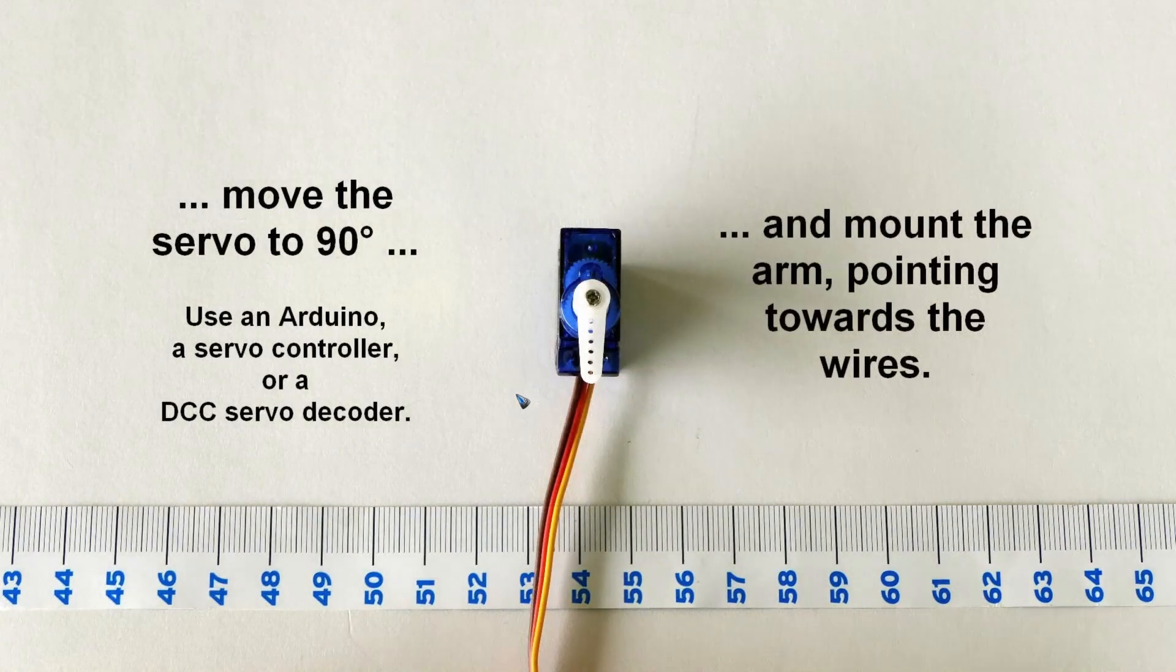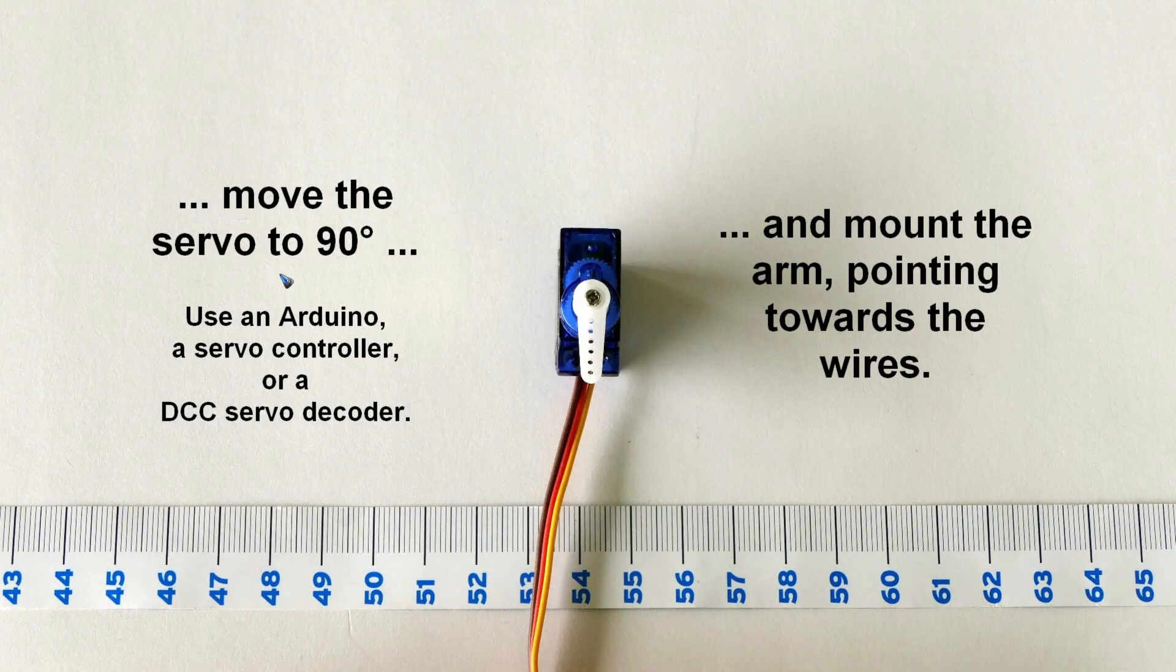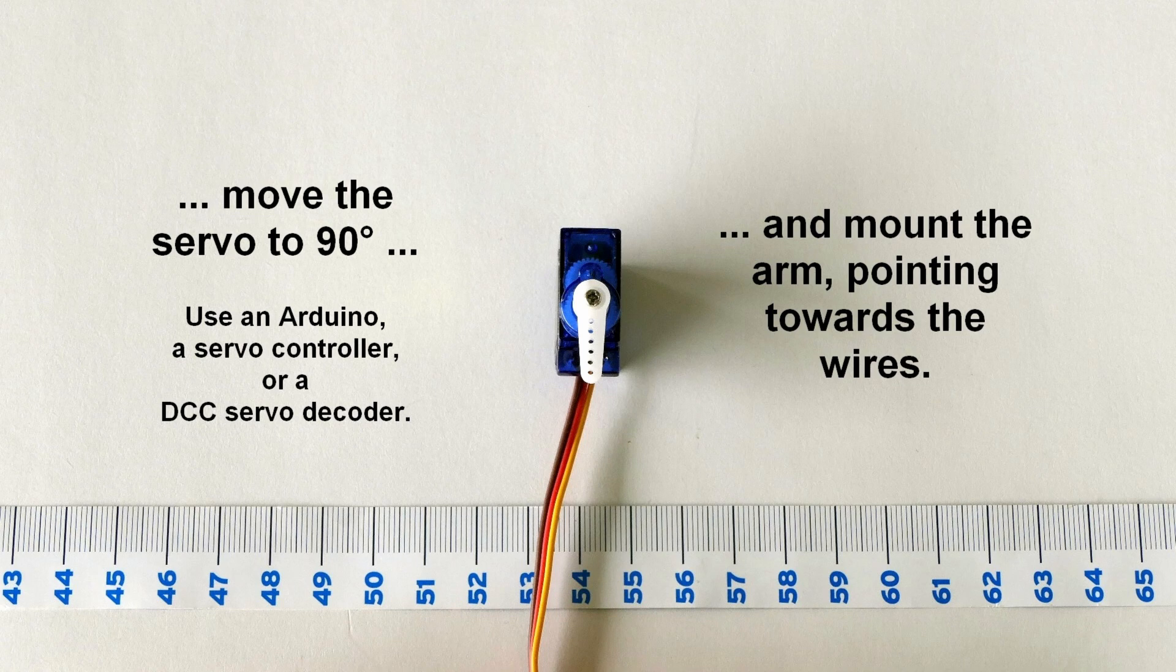And then there's an important step. First, rotate your servo using a servo drive or an Arduino or any servo controller to rotate that servo exactly to the middle, which in the 180 degree type servo is of course 90 degrees. If you have the 90 degree servos, then rotate it to 45 degrees such that the arm can be mounted exactly vertical while the servo is in the middle.